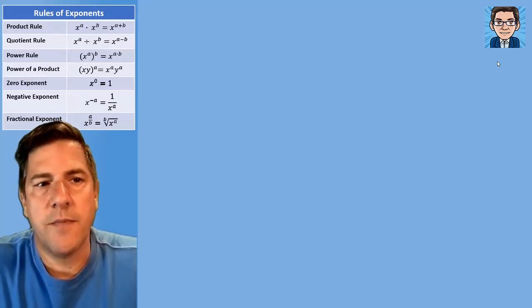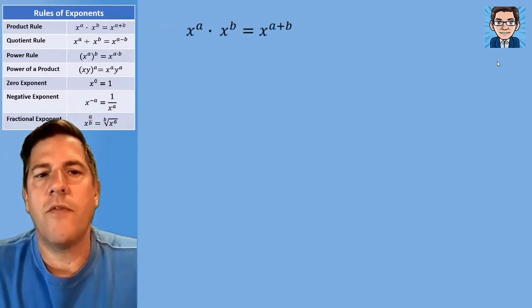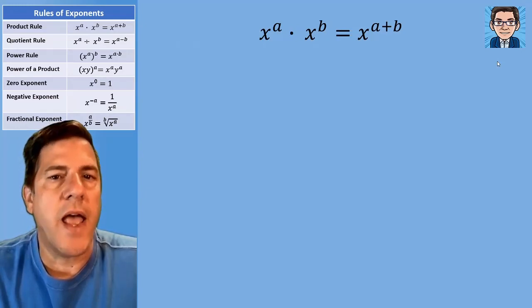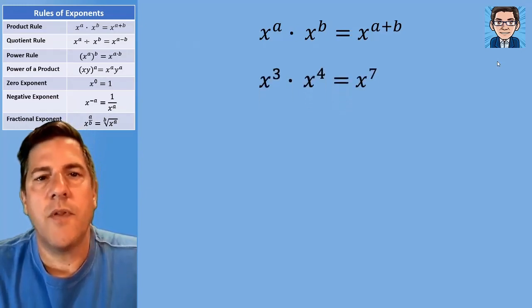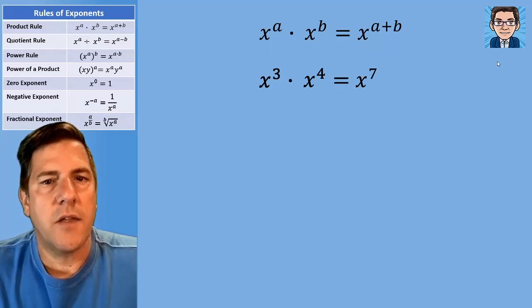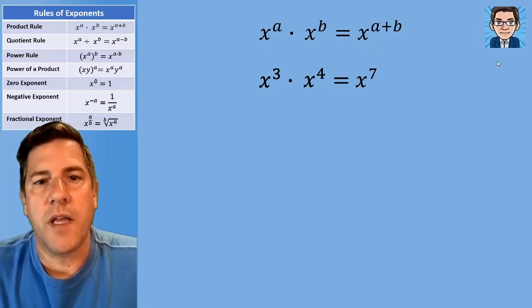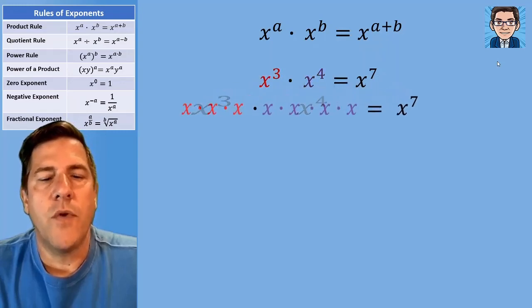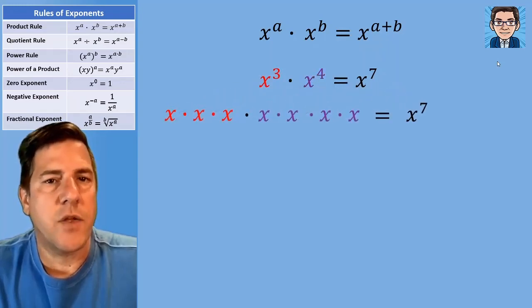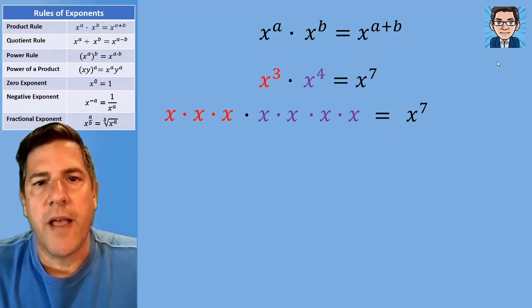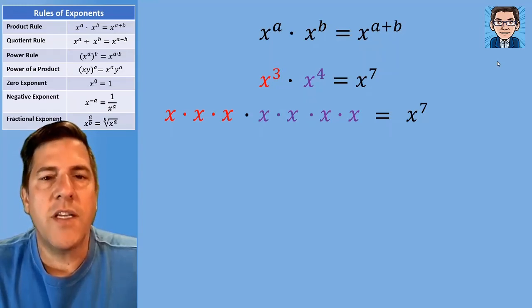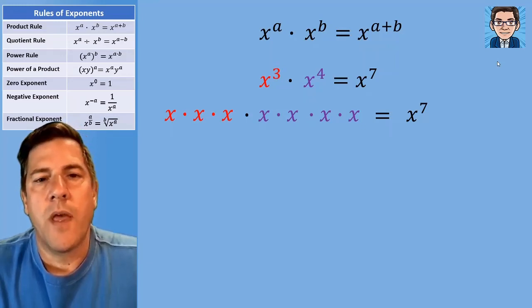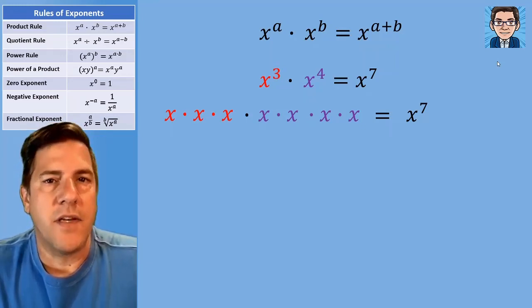Let's take a look at rules of exponents. The first rule is when we multiply two variables that have exponents, we're going to add the exponents. So something like x to the third times x to the fourth equals x to the seventh. Let's see why that works. X to the third means multiplying x three times, and x to the fourth means multiplying x four times. So we're just adding the number of times we're multiplying together — three plus four gives us seven.